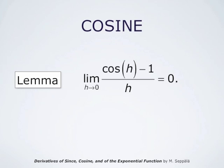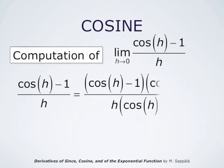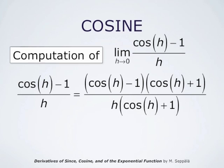This limit can be computed as follows. First, cosine of h minus 1 divided by h can be multiplied and divided by cosine of h plus 1. When h is close to 0, cosine of h plus 1 is certainly different from 0, so we may do this. We get that cosine of h minus 1 divided by h equals cosine of h minus 1 times cosine of h plus 1, all divided by h times cosine of h plus 1.